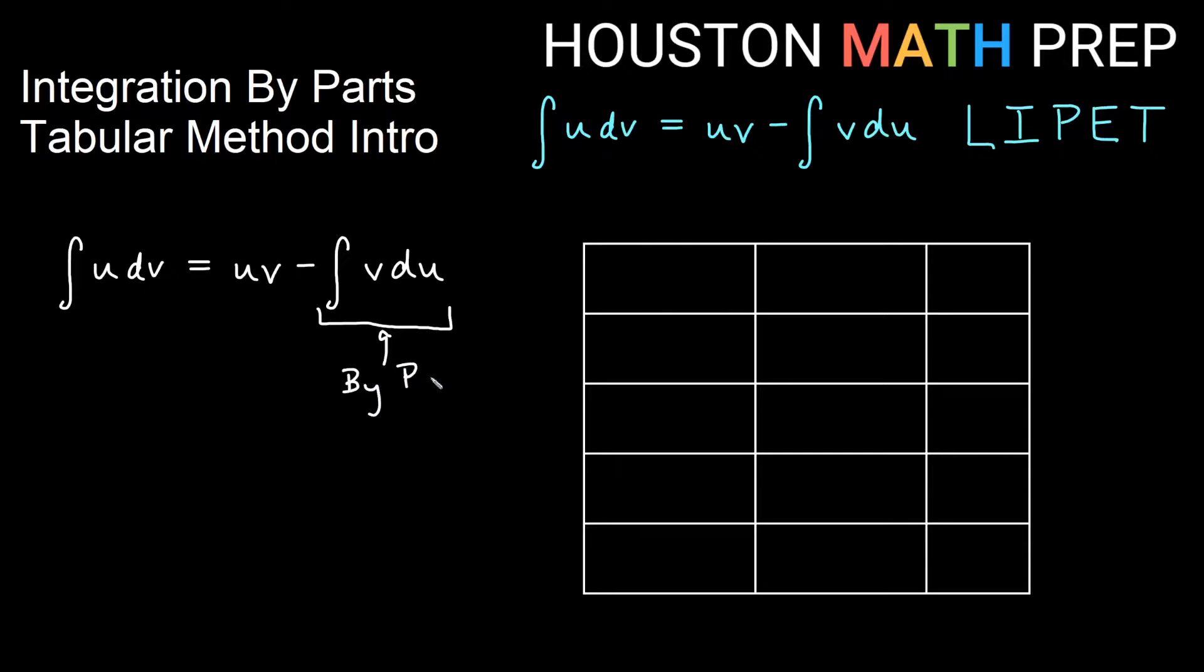So the tabular method is used as a way to organize repeated integration by parts in table format so that you don't have to keep writing u's and v's and du's and dv's over and over, and just kind of do things in a column format as we're going to show you here.